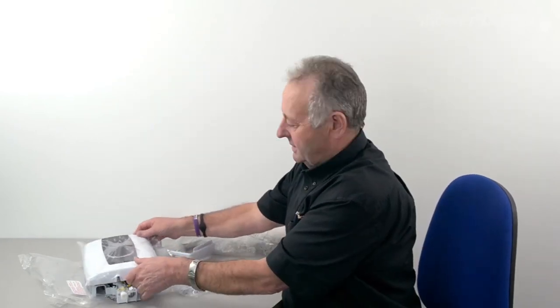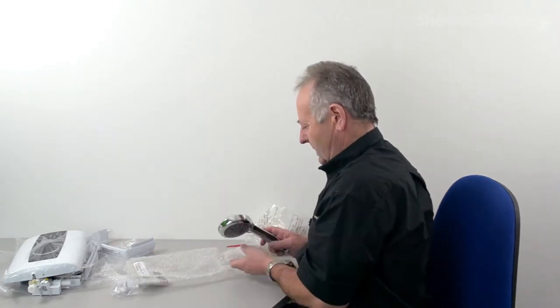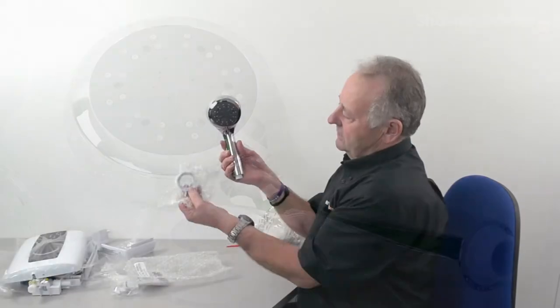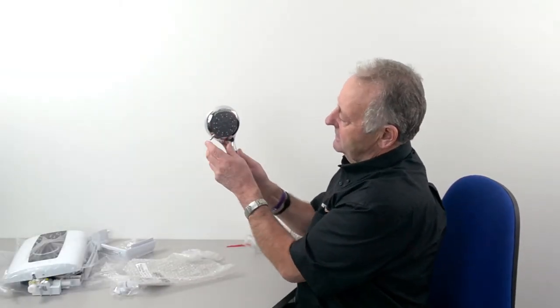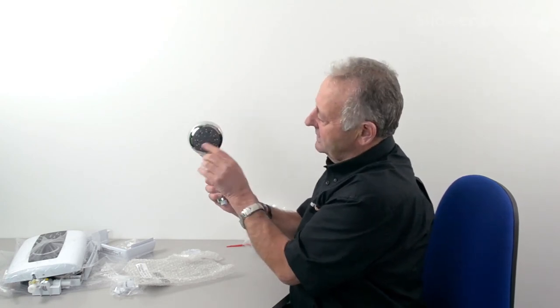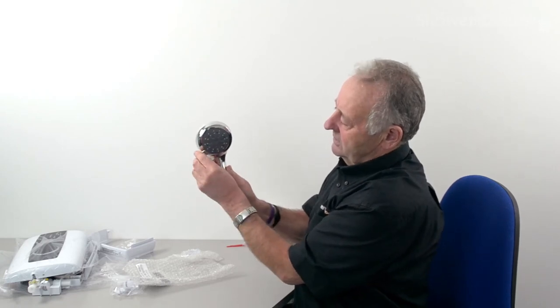We'll have a look at the accessories now. This is the shower head. It comes complete with a key so that if it gets lime scale or gets dirty it's easy to clean. It's a five position shower head and it's got a really lovely movement on it. This head's got a movement that feels much more expensive than it is so it's a really nice head.